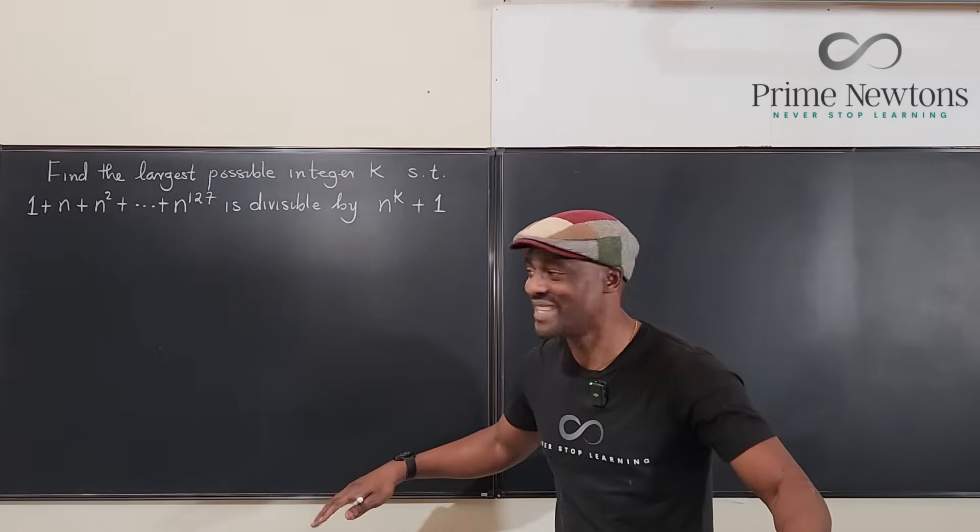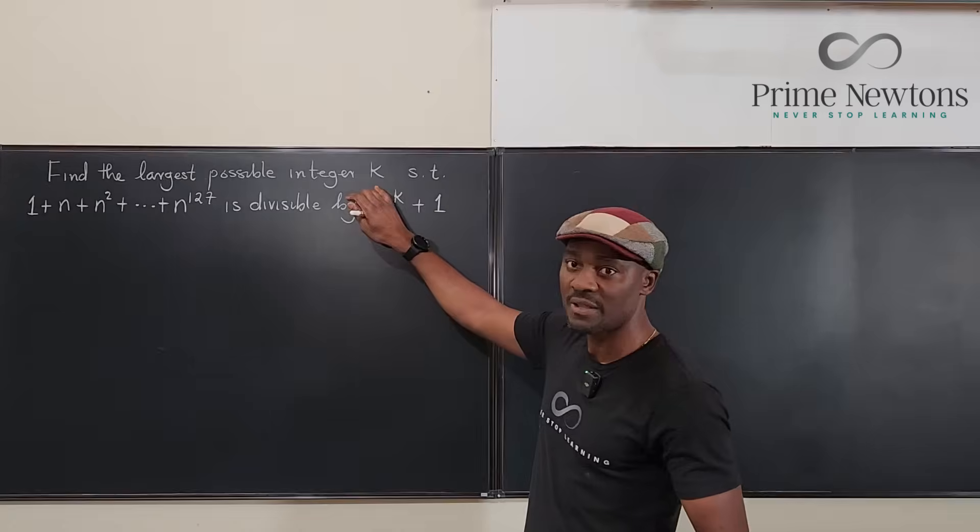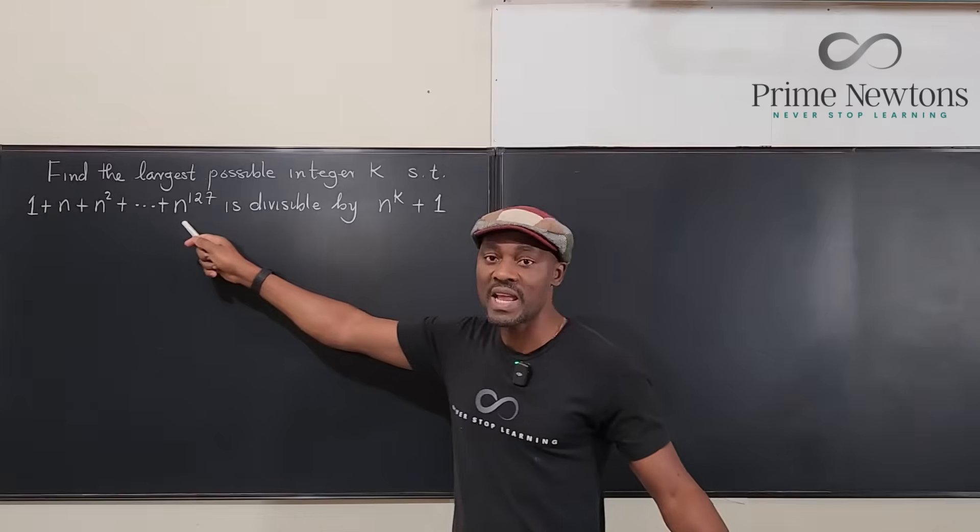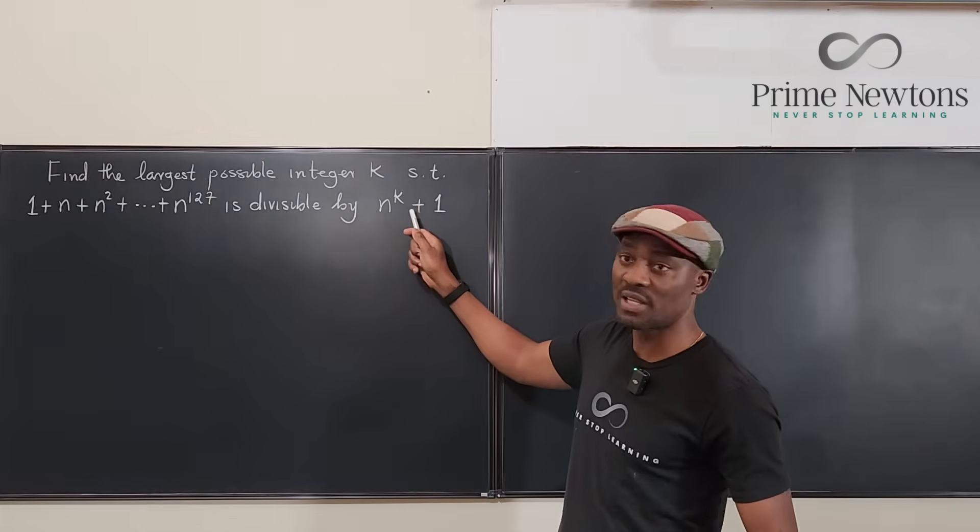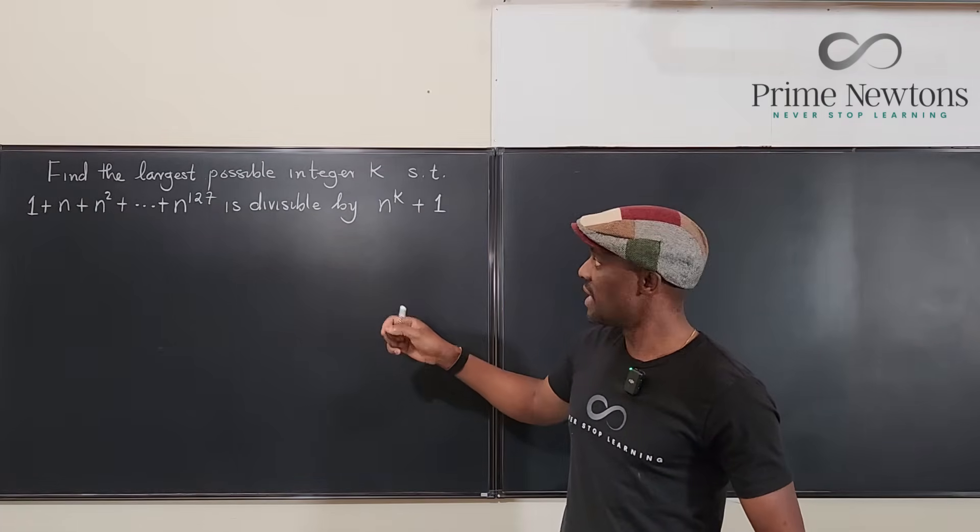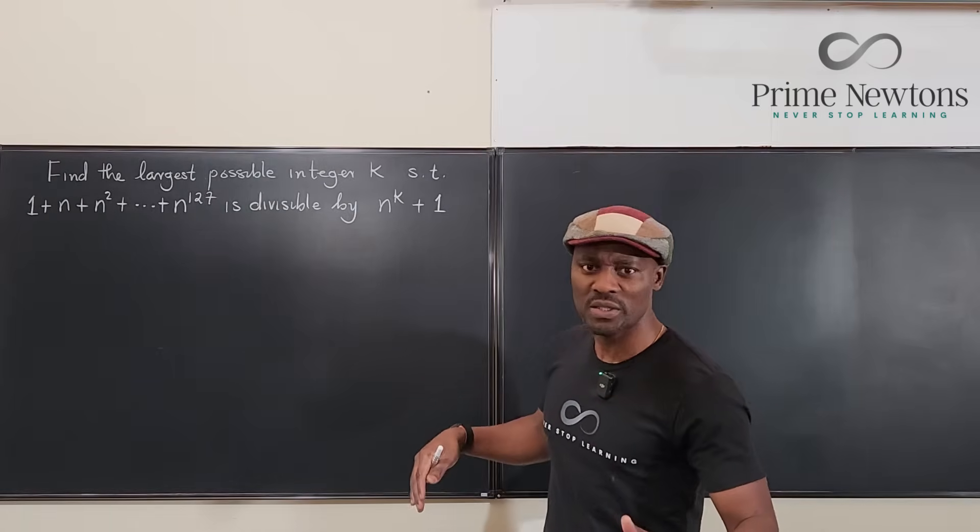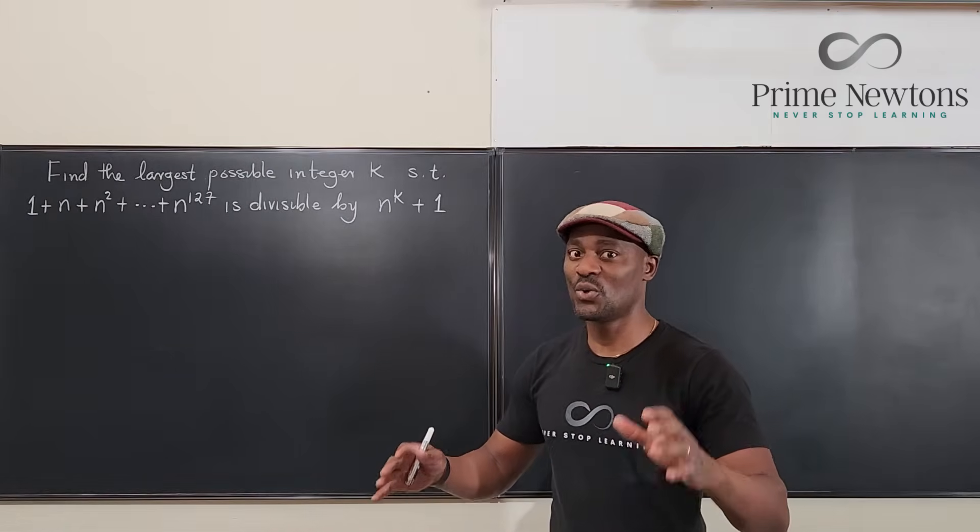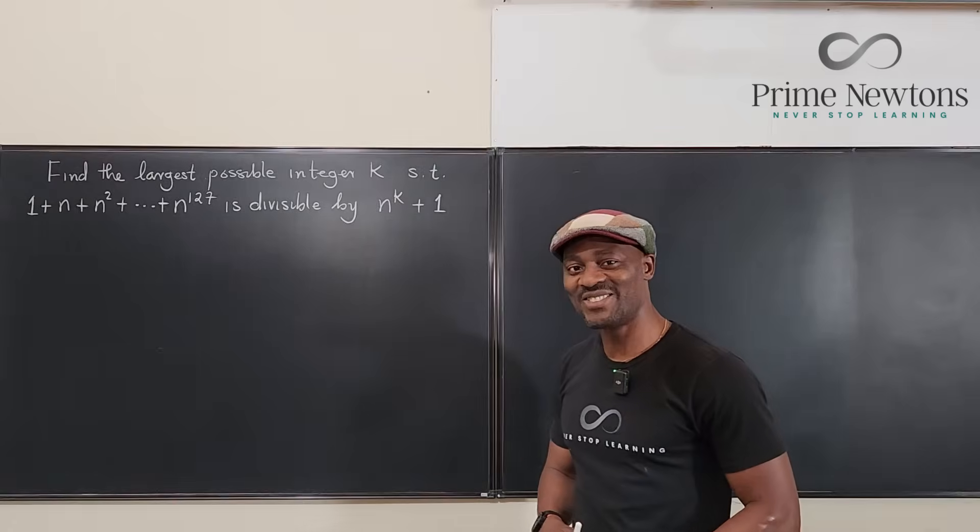The easiest of the week. So we want to find the largest possible integer k such that this series, 1 plus n plus n squared all the way to n to the 127, is divisible by n to the k plus 1. At first, you might go, am I supposed to do long division? None of that is relevant. It is all algebra, just basic factoring. Let's get into the video.